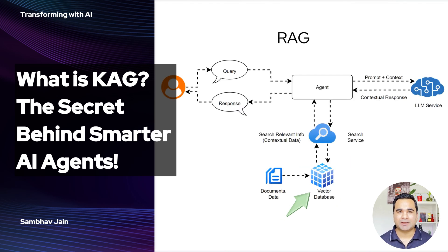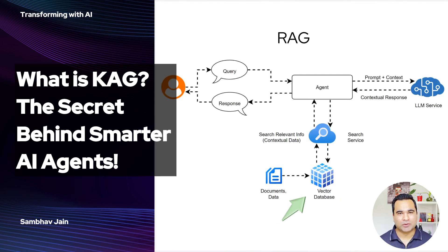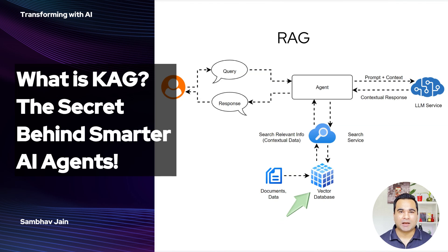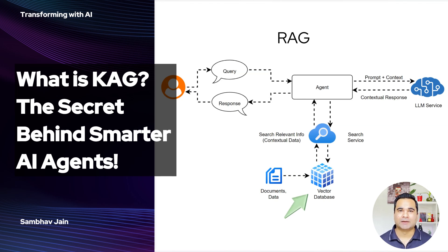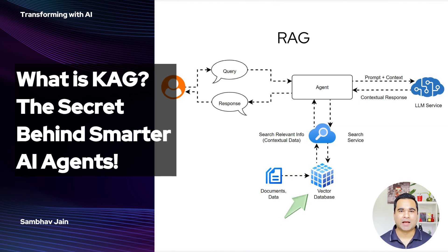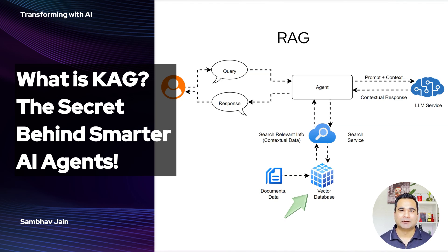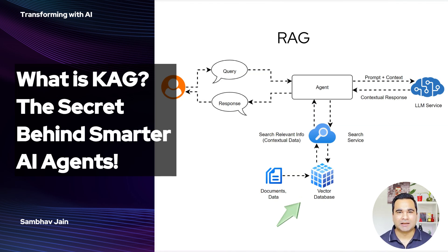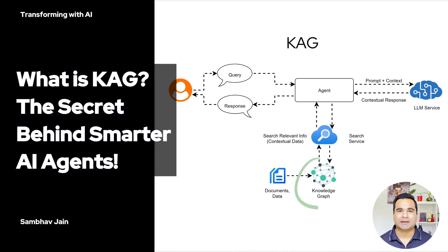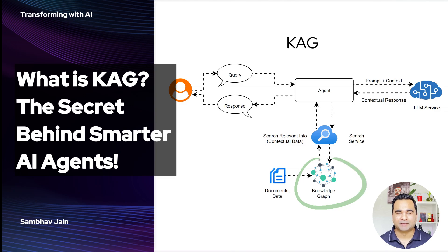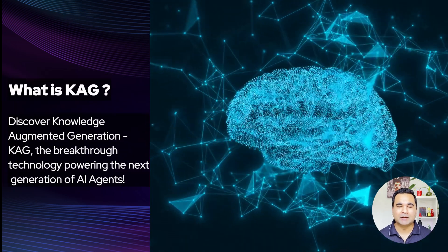Now, if you're wondering how this compares to something like RAG — Retrieval Augmented Generation — check out my other video for a deep dive, link in description. But at a high level, RAG retrieves information from documents and generates answers. KAG, on the other hand, takes things to a whole new level. Let's break it down.